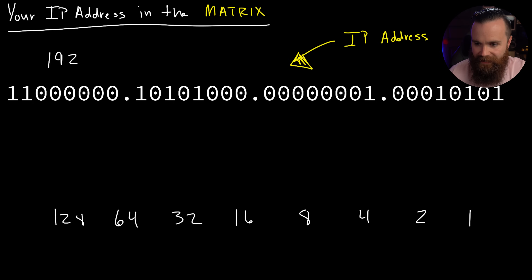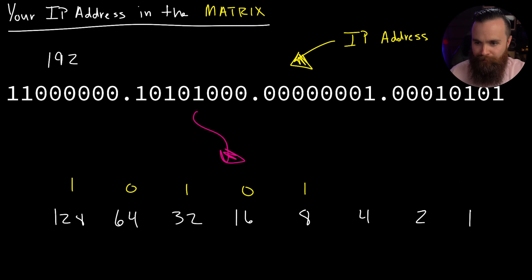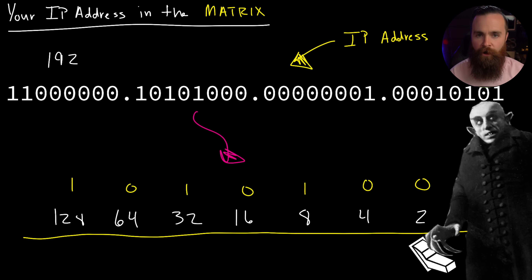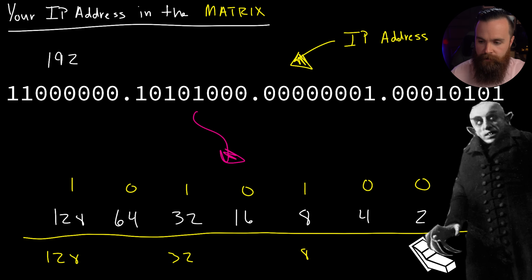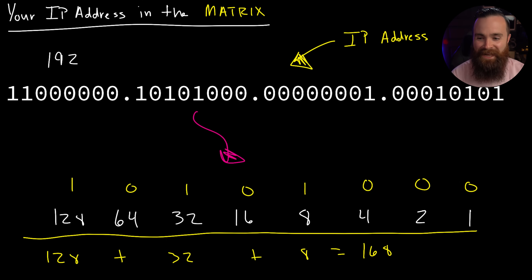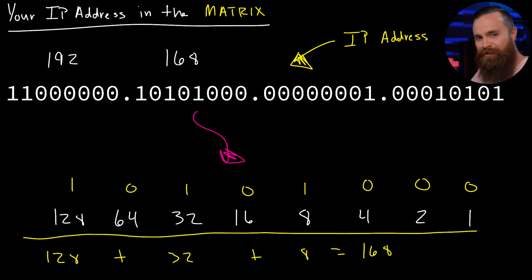Let's do our next octet. Bringing it down and lining up our numbers: 1, 0, 1, 0, 1, 0, 0, 0. Let's see what's turned on and what's turned off. We've got 128 - yes. No 64. We've got 32. No 16. We do have 8. No 4, 2, or 1. So we're left with 128, 32, and 8. Add those together: 128 plus 32 is 160, and 160 plus 8 is 168. The second octet in decimal is 168. Now it's starting to look familiar.